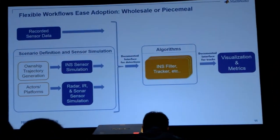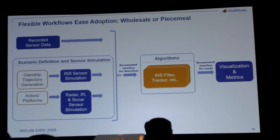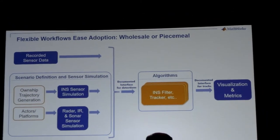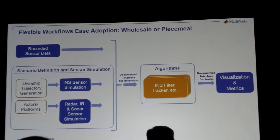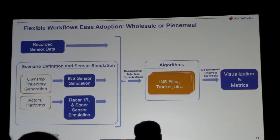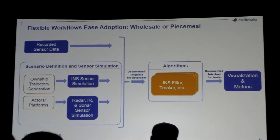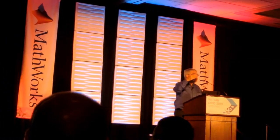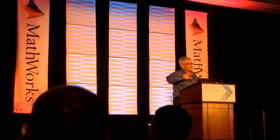Whether you use our sensor models or data collected from your own sensors, the common thread is that the interface into our tracking and localization algorithms goes to a common interface — the object detection format, in the case of sensors like radar and lidar. If you use our sensor models, data is generated in that format and everything downstream is digested directly. If you have your own sensor data, it's very easy to map to this object detection format. The reward is that everything downstream — tracking algorithms, visualization metrics, and code generation capabilities for C code — will work.